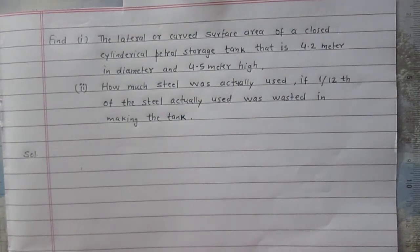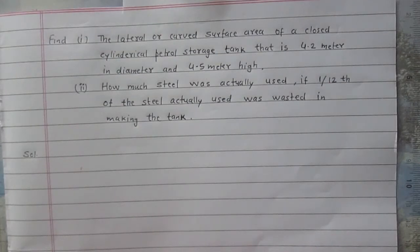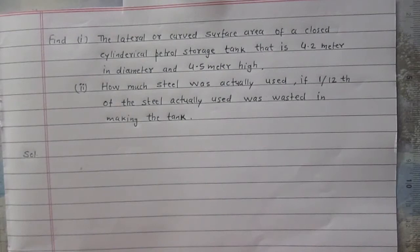Find number one: the lateral or curved surface area of a closed cylindrical petrol storage tank that is 4.2 meters in diameter and 4.5 meters high. Number two: how much steel was actually used if one-twelfth of the steel actually used was wasted in making the tank. In the first part of this question we are to find the lateral or curved surface area.